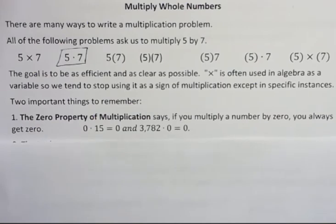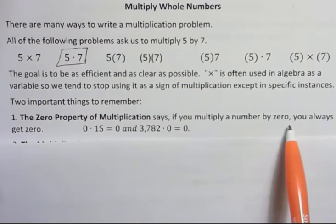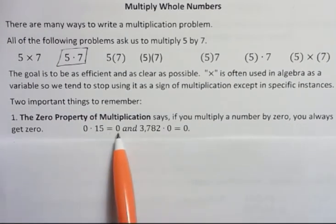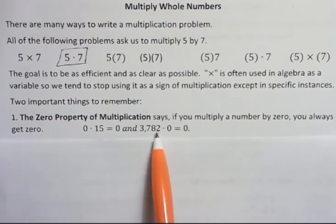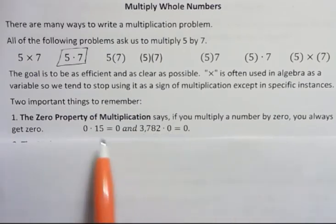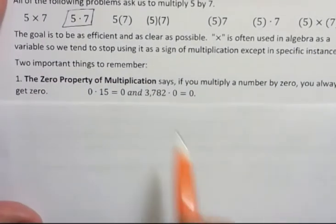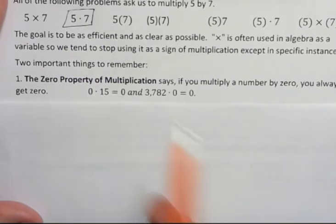Two important things to remember. The zero property of multiplication says if you multiply a number by 0, you always get 0. 0 times 15 is 0, and 3,782 times 0 is 0. It doesn't matter if the 0 comes first or second. If one of your factors, that's part of your multiplication problem, is 0, then the whole thing is 0. And you remember, the answer to a multiplication problem is product. We saw that in another video. But the two things you're multiplying are factors, and the answer is a product.